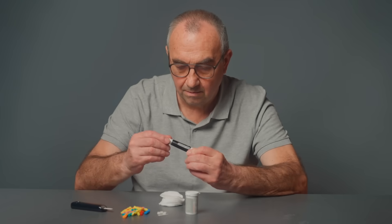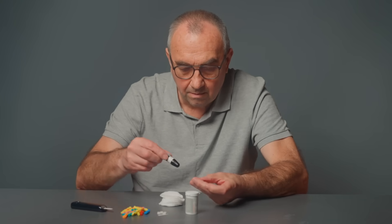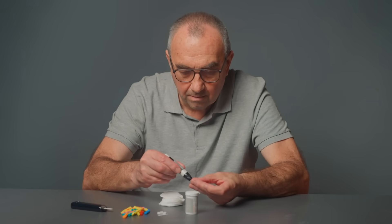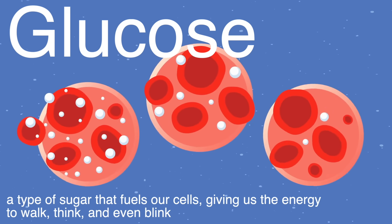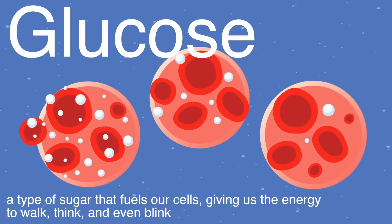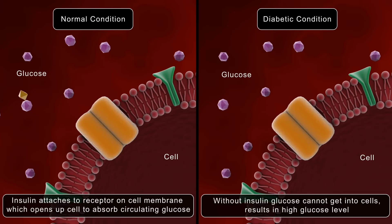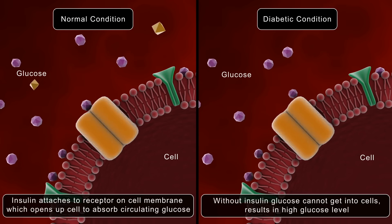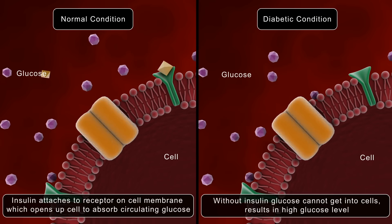To understand how a glucose meter works, it's important to know why it's needed. Glucose is a type of sugar that fuels our cells, giving us the energy to walk, think, and even blink. Insulin, a hormone produced by the pancreas, helps regulate glucose levels in the bloodstream.